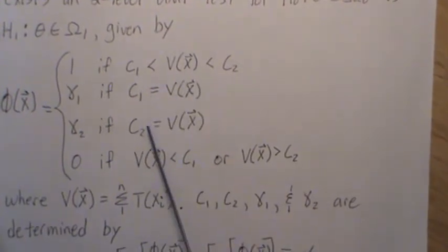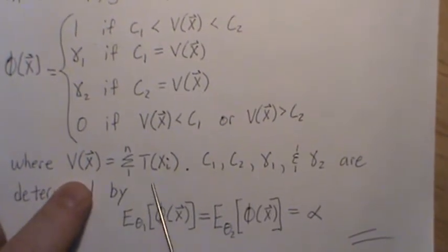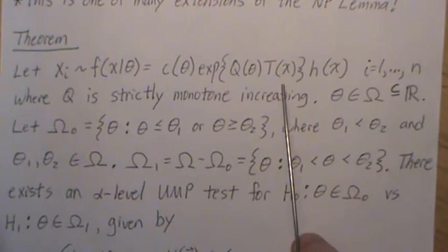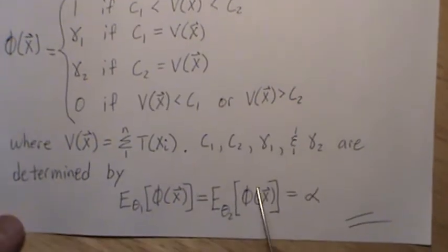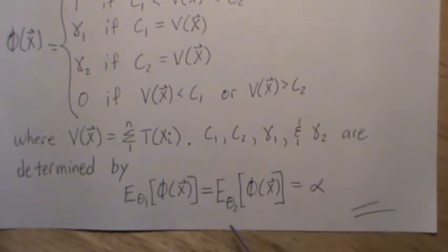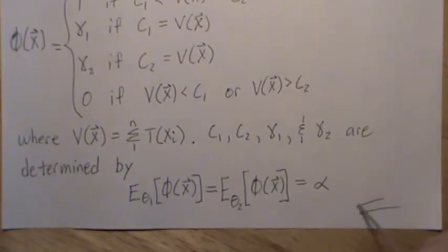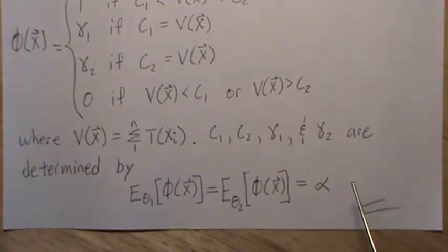The test statistic is the sum of the Tᵢ's from the exponential family. c₁, c₂, γ₁, γ₂ are determined by two side conditions. Unlike Neyman-Pearson which has one side condition, this extension has two: the expected value of the test function at θ₁ must equal α, and the expected value at θ₂ must also equal α. This makes it a UMP test for the composite hypothesis.